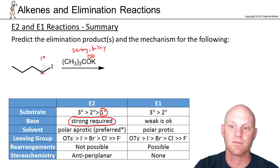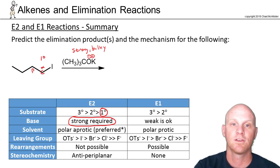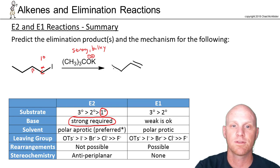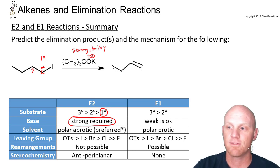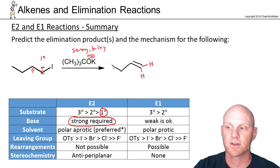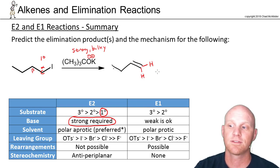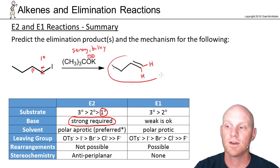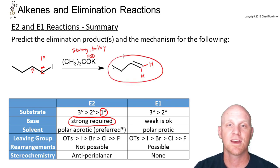There's the alpha carbon, and the only beta carbon available is one specific carbon, so we can only form the alkene in one location. With two identical hydrogens on one side of that alkene, cis and trans are not even possible. This is the only elimination product.